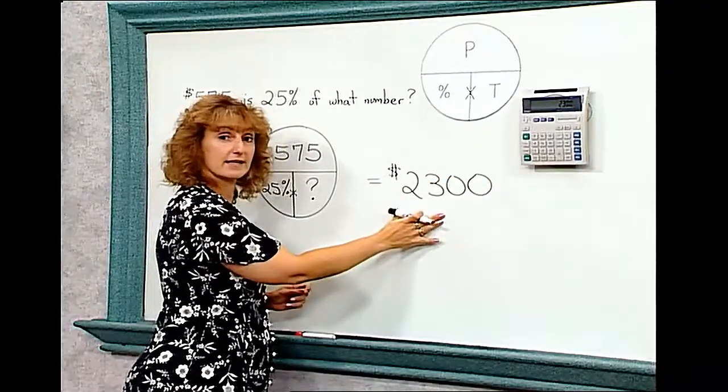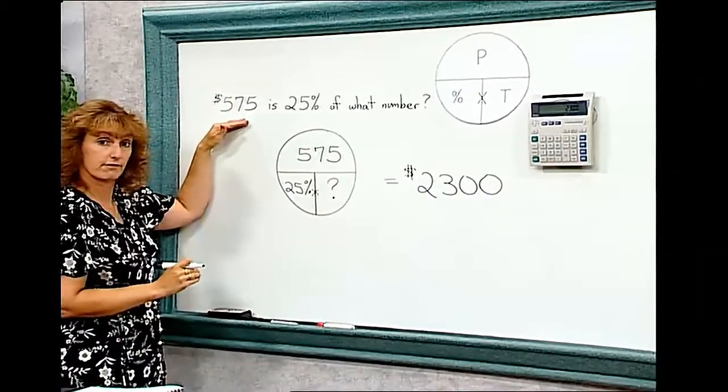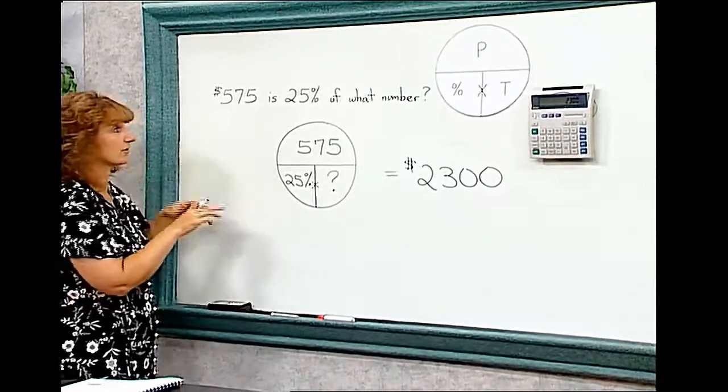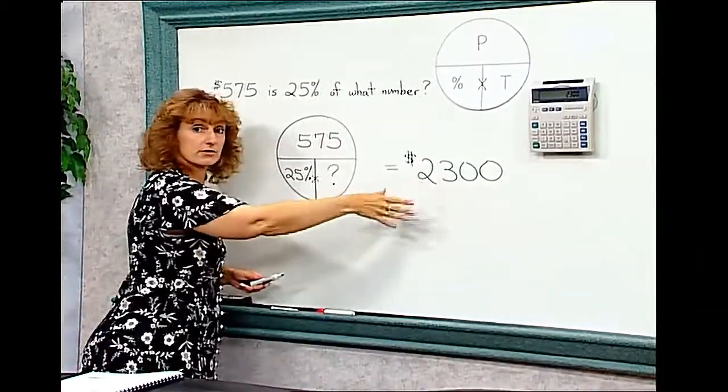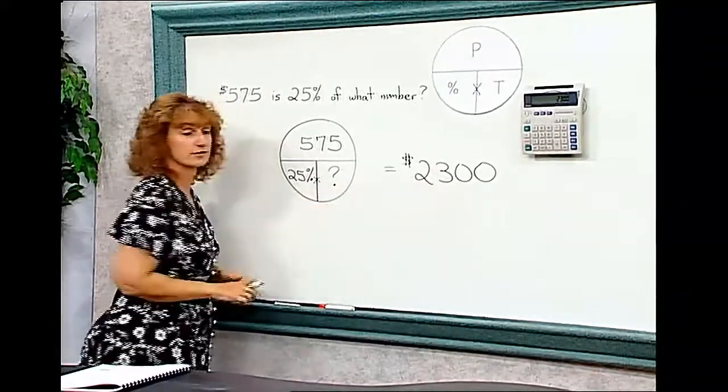If we want to think back, is that reasonable? First, it is larger than $575, and it's approximately four times larger. Four times five is 20, so you know your answer is in the right ballpark. We know we've got the correct answer of $2,300.